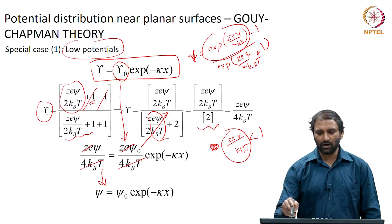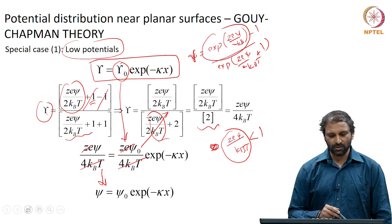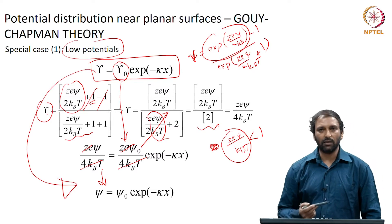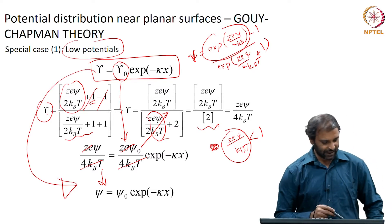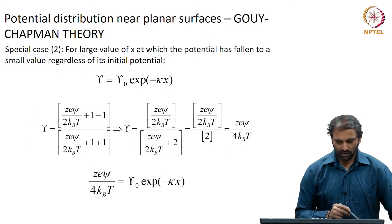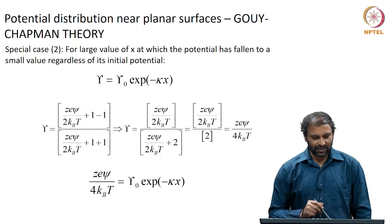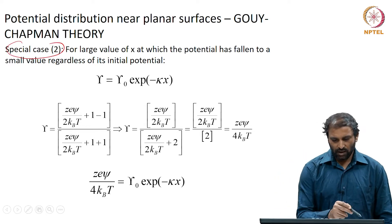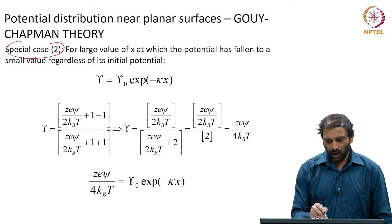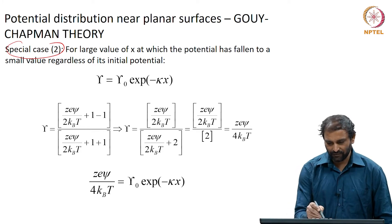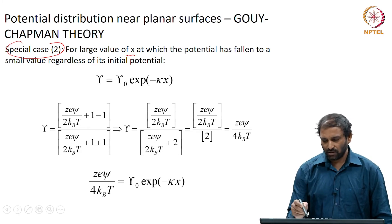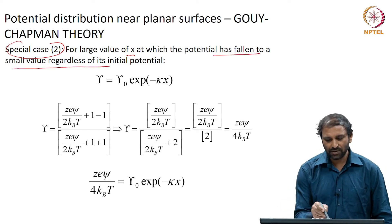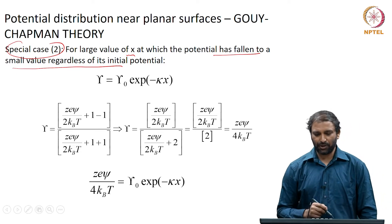Therefore, the general Gouy-Chapman solution simplifies to the Debye-Hückel approximation for the case of low potential. The other simplification — special case 2 — is for large values of x, at which the potential has fallen to small values regardless of its initial potential.